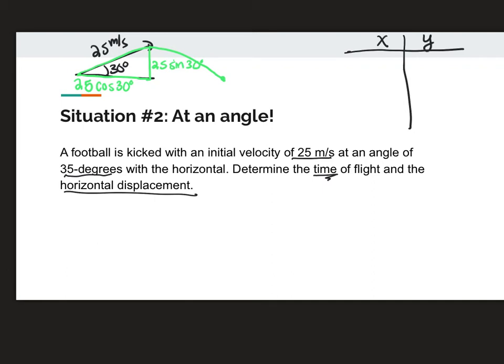So now I'm going to work on my X and Y chart. I know both of my initial velocities. And in this case, I do have a velocity initial in the Y because it's launched at an angle. My velocity initial in the X is 25 cosine 30 and the Y is 25 sine 30.